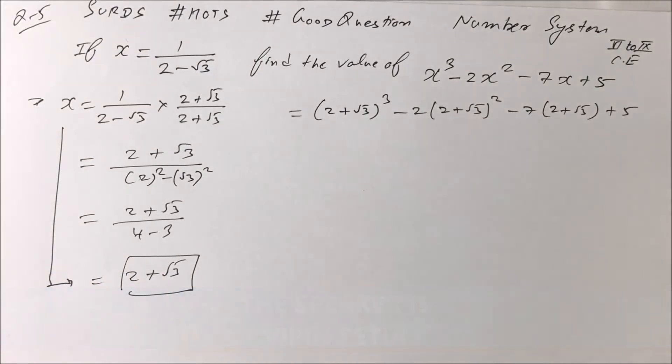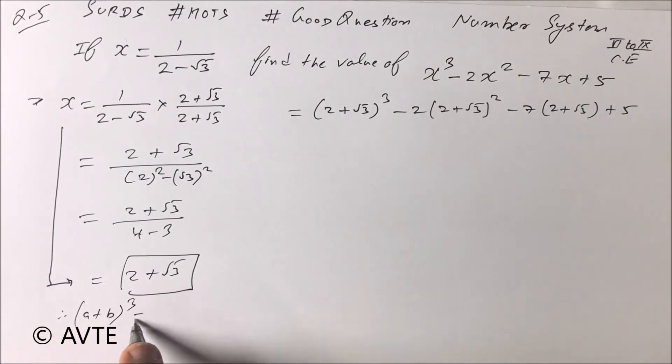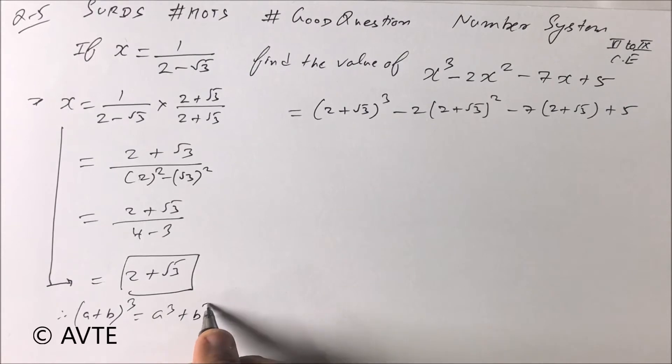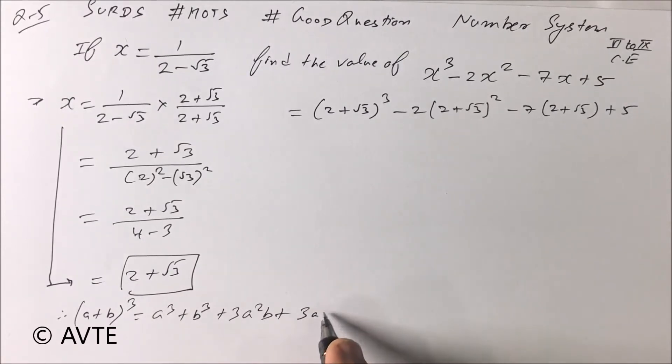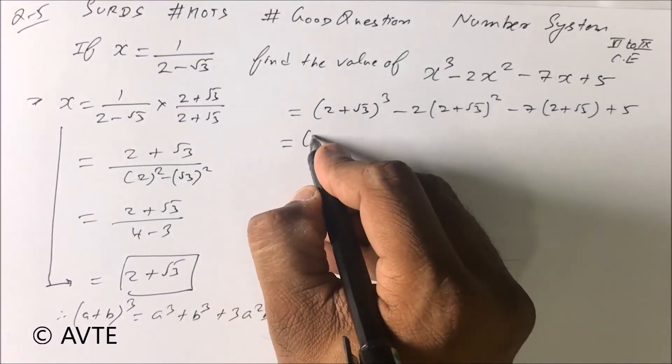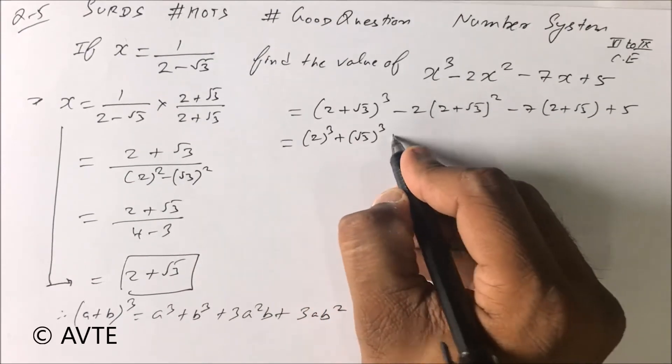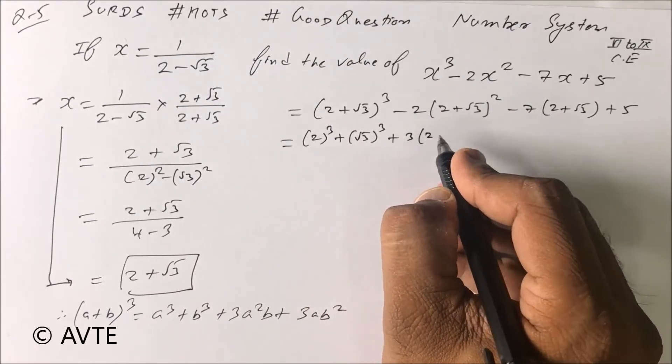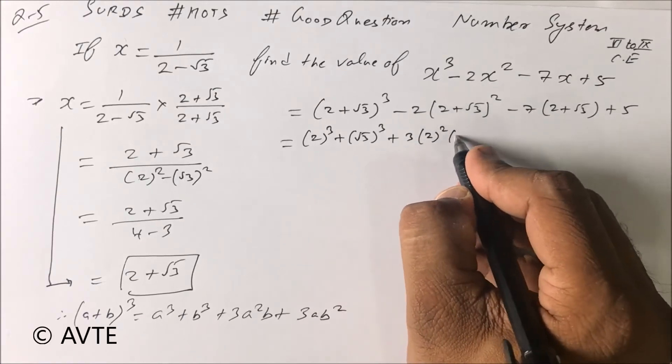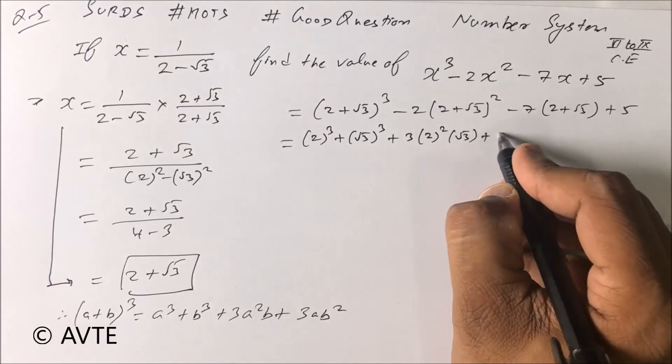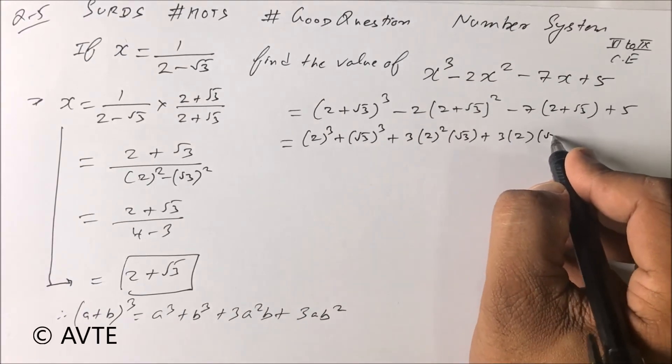So guys, you must know the formula of (a plus b)³, that is a³ plus b³ plus 3a²b plus 3ab². Because we use this formula here, this is 2³ plus (root 3)³ plus 3(2²)(root 3) plus 3(2)(root 3)².